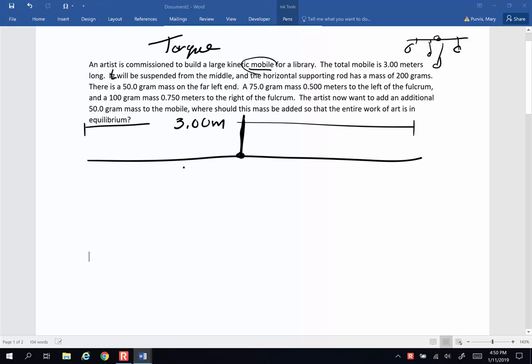And the horizontal supporting rod has a mass of 200 grams. So right in the center, the CG of the supporting rod, I'm going to put a down force vector representing the weight of this object, which is 200 grams. And actually that's its mass, but I'll explain that in a moment.